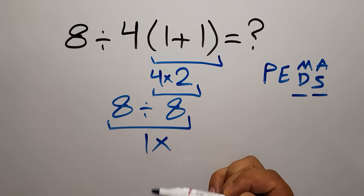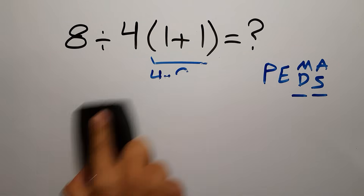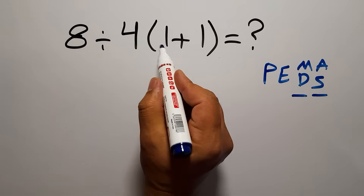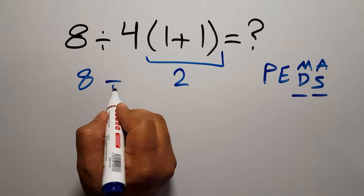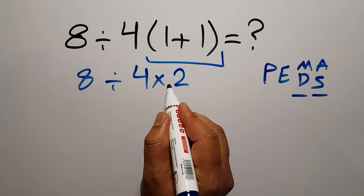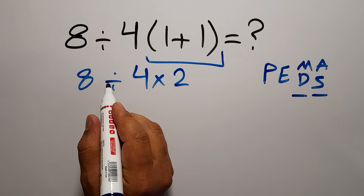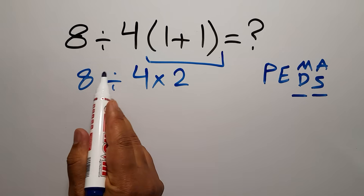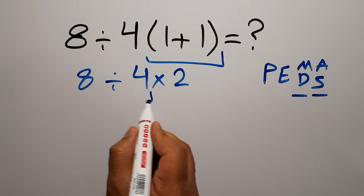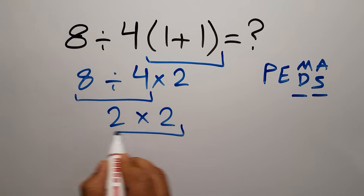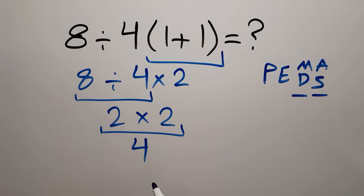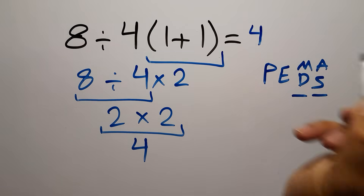1 plus 1 is just 2, so we have 8 divided by 4 then times 2. Multiplication and division have equal priority and we work from left to right, so first this division: 8 divided by 4 is just 2. So 2 times 2 equals 4. Therefore our final answer is 4.